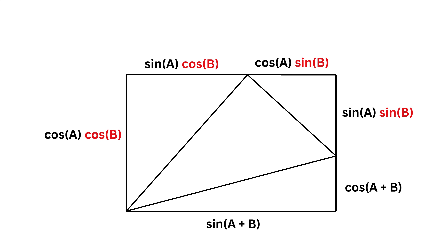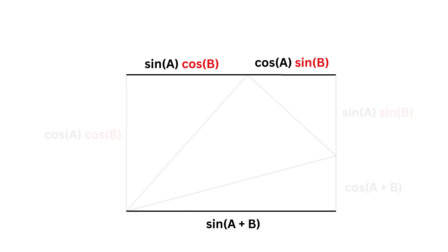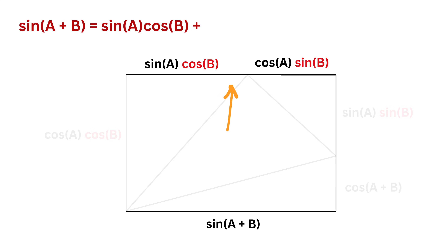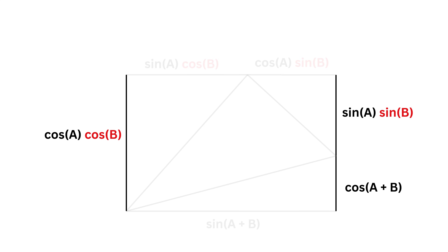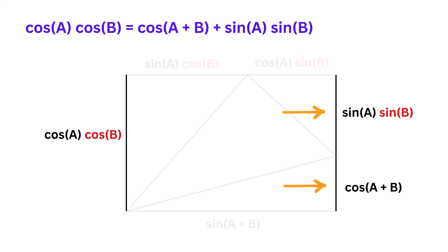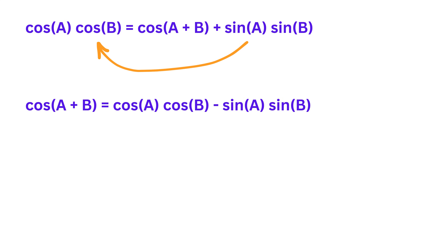Now here comes the climax. Since this is a rectangle, therefore both these side lengths will be equal to each other. This side length is equal to sine of A plus B, and it equals this side length, which is sinA·cosB plus cosA·sinB. This is the actual formula for sine of A plus B, which we have proven using simple construction. Now these two side lengths will also be equal to each other, therefore this equals cos(A+B) plus this. Rearranging gives cos(A+B) equals cosA·cosB minus sinA·sinB, and that's it.